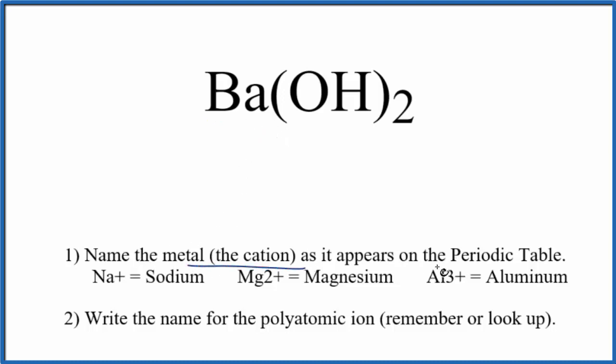So we write first the name of the metal as it appears on the periodic table. Ba, that's barium.